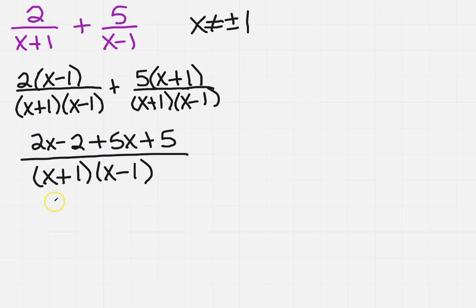So now 5 and 2 is 7. Now 5 minus 2 is positive 3 over x plus 1, x minus 1. And then x cannot be plus or minus 1.